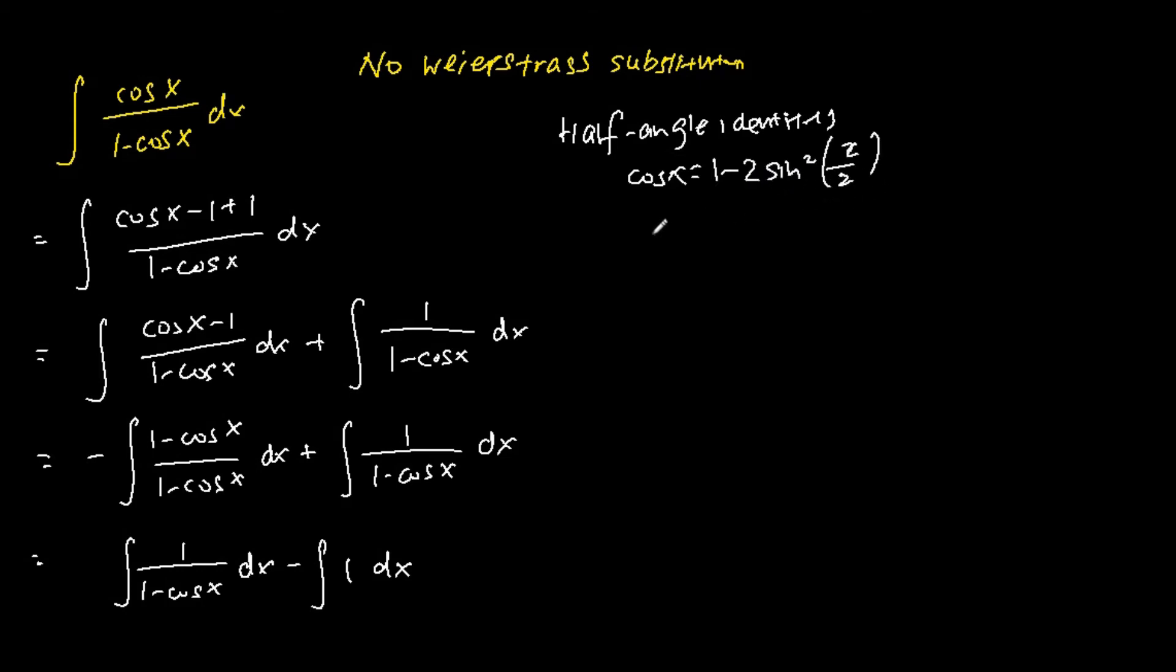So we substitute the cosine x in the first term as 1 minus 2 sine squared x over 2. And we get the following.